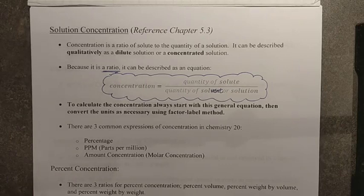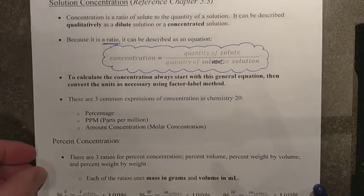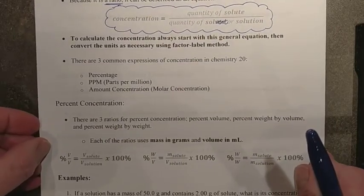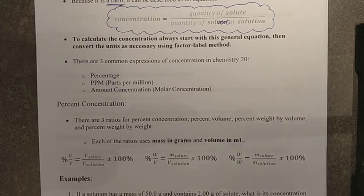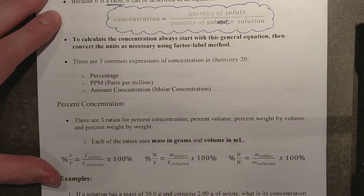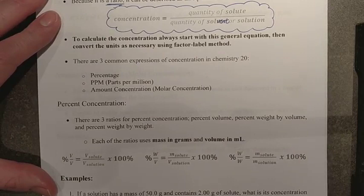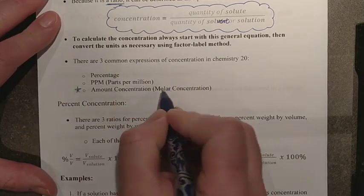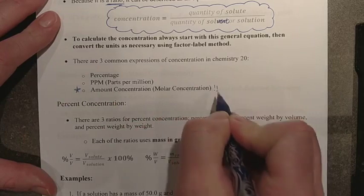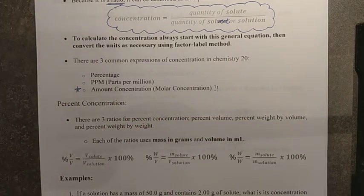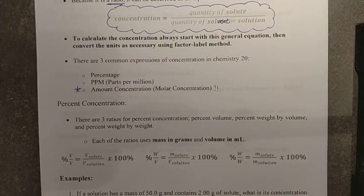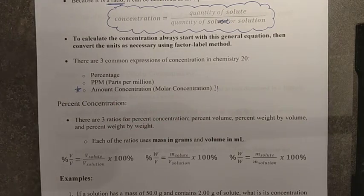We'll do this generally through the factor label method as we get through this, because really, we're just looking at the various different units. Now, there are three different ways in which we are going to calculate this concentration in Chem 20, and there's one that carries forward through to the last unit and definitely into Chemistry 30, and that will be amount or molar concentration. If you're going to pay attention and concentrate on one, this is the one that you must know inside and out and be able to work with well if you want any success in future courses.